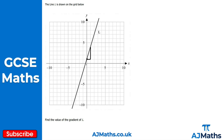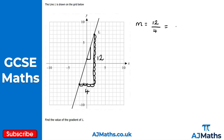Let me pick a larger triangle to confirm. Going across four units and up twelve units gives m equals twelve divided by four, which is three again. As you can see, it doesn't matter the size of the triangle you draw — as long as you draw it correctly, you will always get the same gradient.